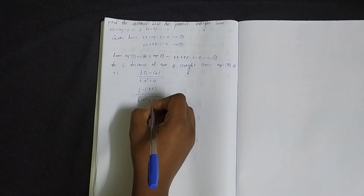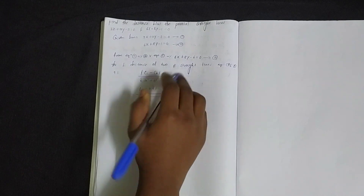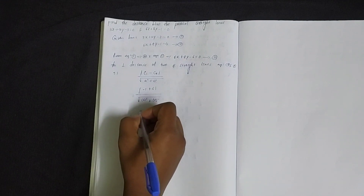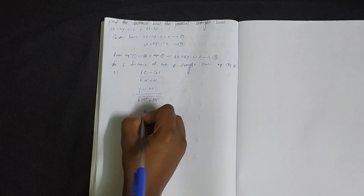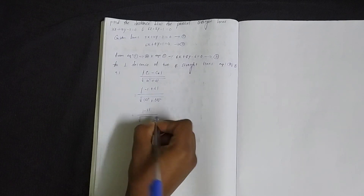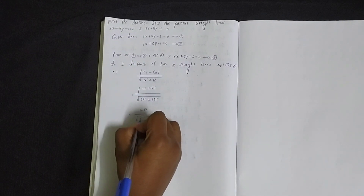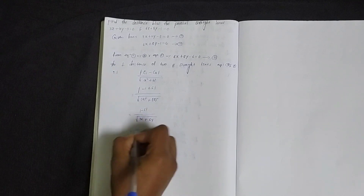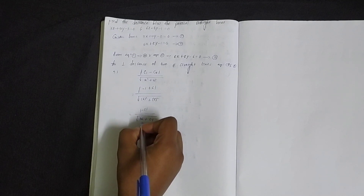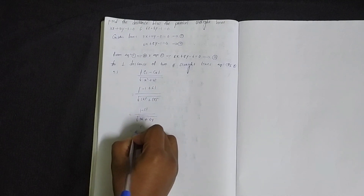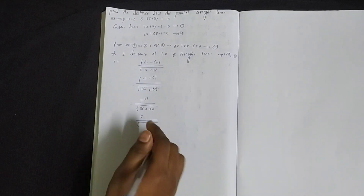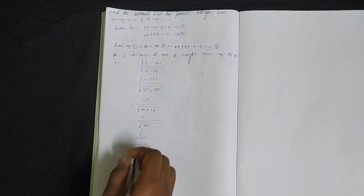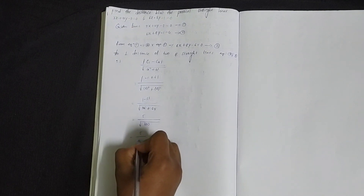Using the distance formula: 8 whole square... minus 1 plus 6, that is minus 5, divided by root of 6 squared (36) plus 8 squared (64). This gives 5 by root of 36 plus 64, which equals 5 by root of 100, equal to 5 by 10.